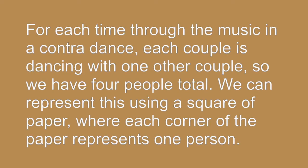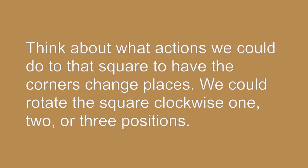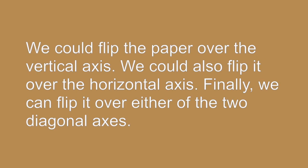For each time through the music in a Contra dance, each couple is dancing with one other couple, so we have 4 people total. We can represent this using a square of paper, where each corner of the paper represents one person. Think about what actions we could do to that square to have the corners change places. We could rotate the square clockwise 1, 2, or 3 positions. We could flip the paper over the vertical axis, the horizontal axis, or either of the two diagonal axes.